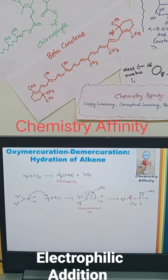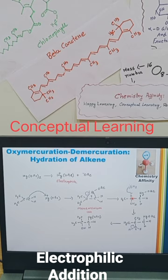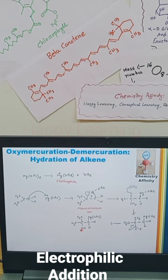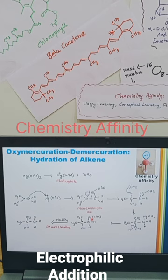The next step is nucleophile attack. A water molecule attacks the carbocation, forming a carbon-oxygen bond. The final step is reduction using sodium borohydride, which is called the demercuration process.